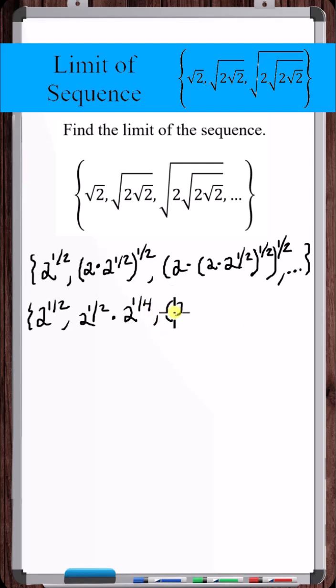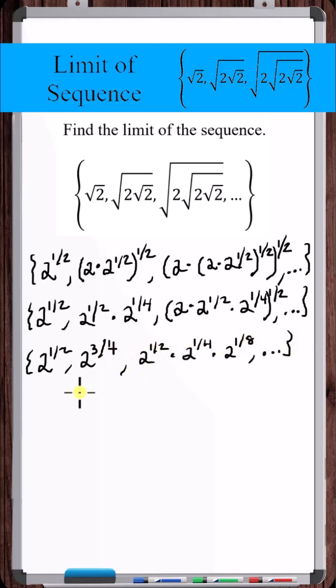Distribute the one-half to each term. Add the exponents. Add these three exponents.